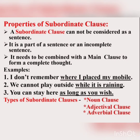In the same way, 'we cannot play outside while it is raining.' The clause 'while it is raining' is not a complete sentence — it depends on the main clause 'we cannot play outside.' Similarly, 'you can stay here as long as you wish.' The clause 'as long as you wish' depends on the main clause 'you can stay here' for its complete sense. So, it is a subordinate clause.